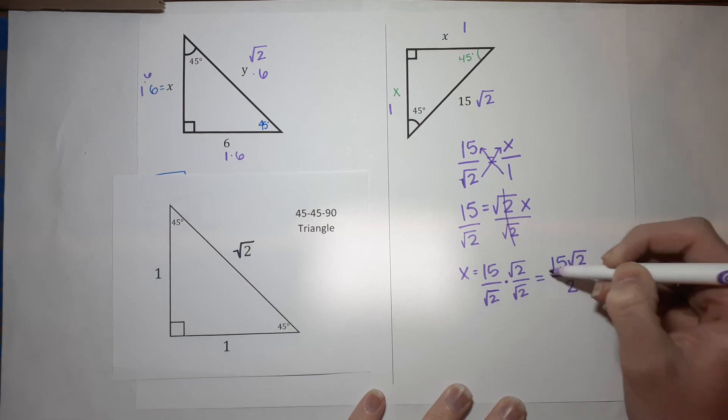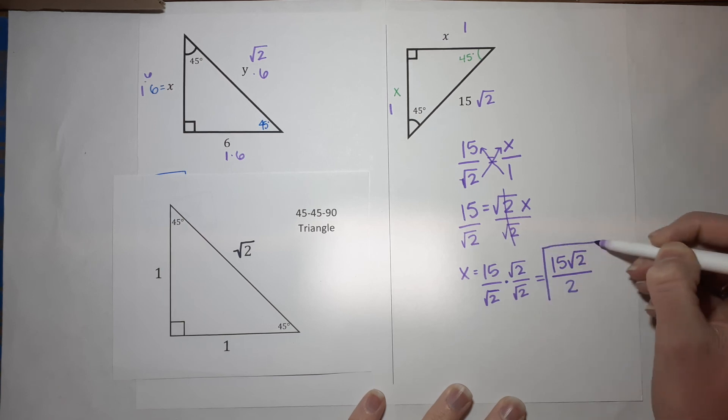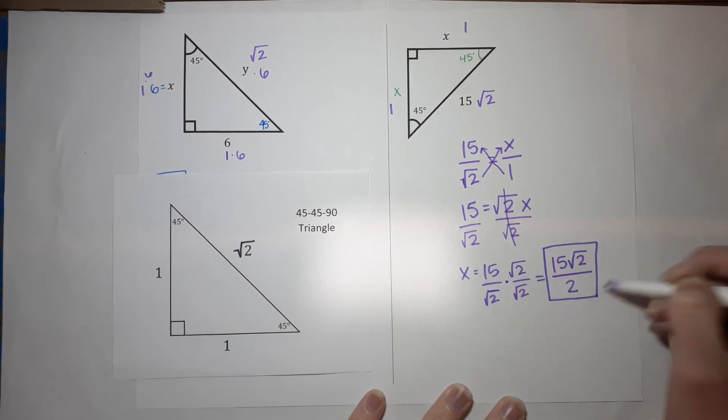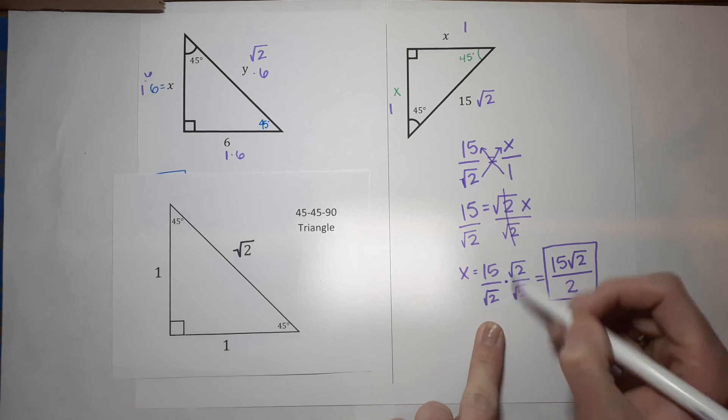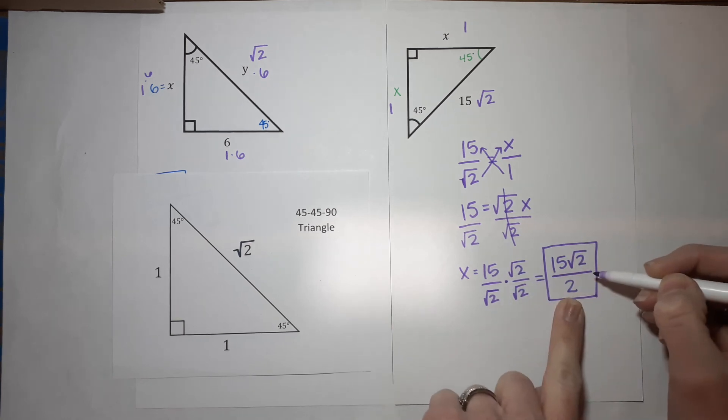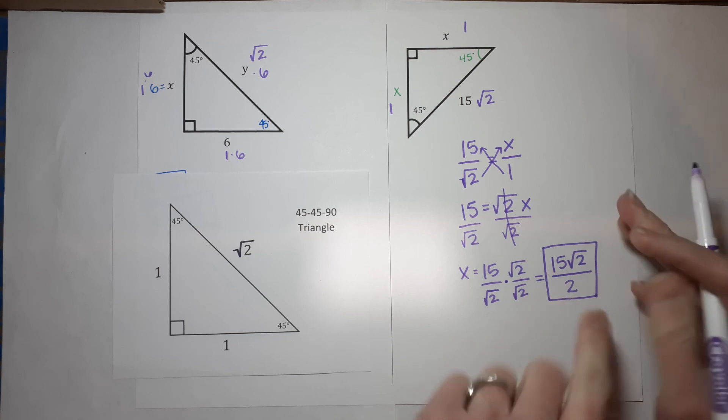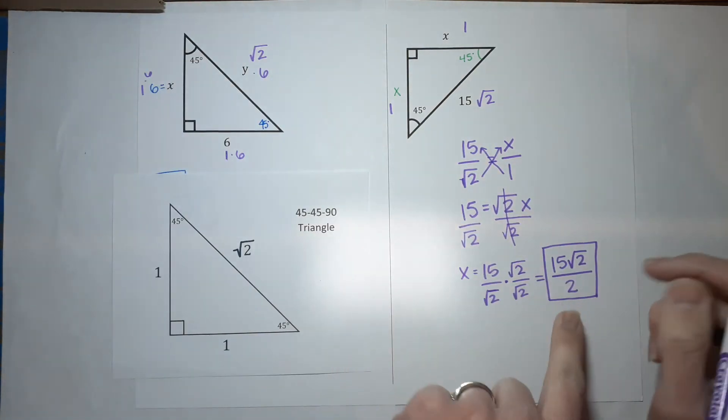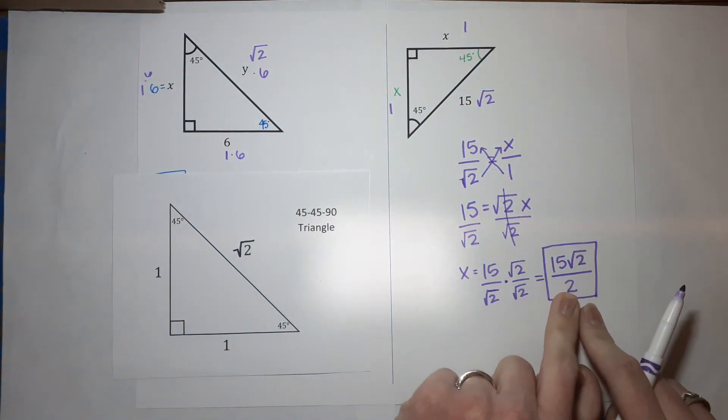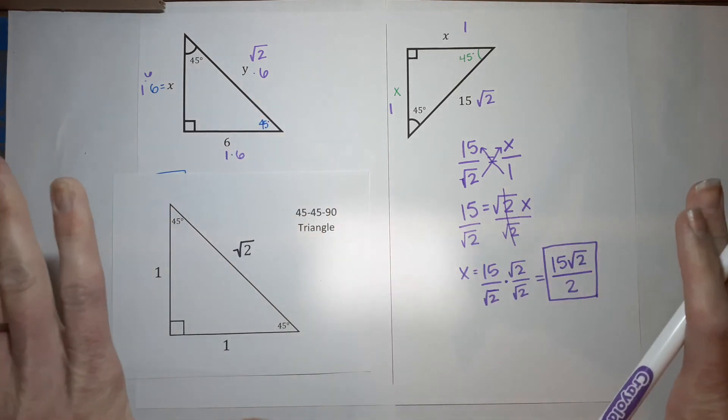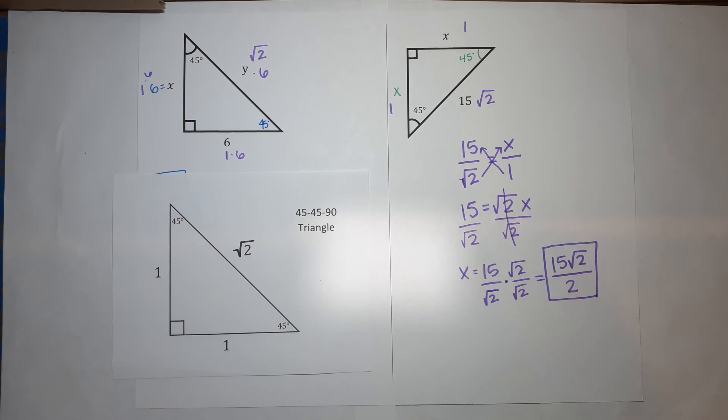So that is your answer. The 15 over the square root of two and this are actually the same. If you put them in your calculator, you'll get the same ugly decimal. This one, we just like a lot better because there's not a radical in our denominator. Hopefully that makes sense. And you can get your homework done and go to bed and have dreams of math that aren't nightmares.